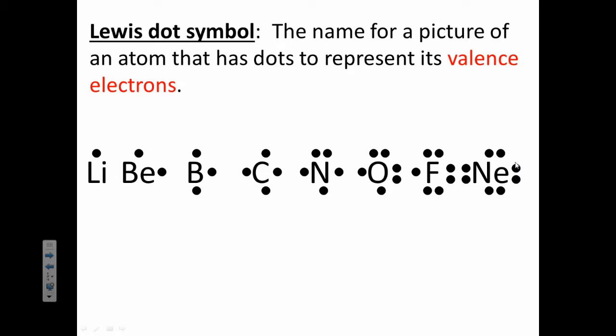We call the Lewis dot symbol the picture that has an atom with the dots that show where the valence electrons are. For example, lithium has one valence electron. Beryllium has two. You can see they spread out to four sides when you're drawing these.